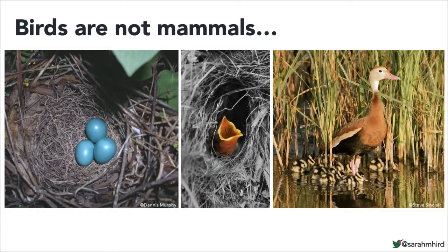Birds, on the other hand, have neither milk nor live birth. Parents will build a nest, where the mother lays the eggs from her cloaca. The eggs are incubated and then hatch. So the first exposure birds have to our microbial world is usually within the nest. Species with altricial young will feed the little helpless babies — usually insects or fish, something high in protein. Precocial young hatch and are off feeding themselves soon after birth. In other words, no milk.